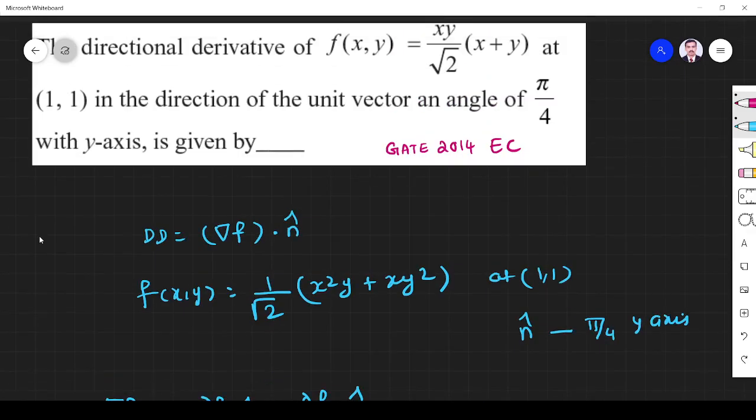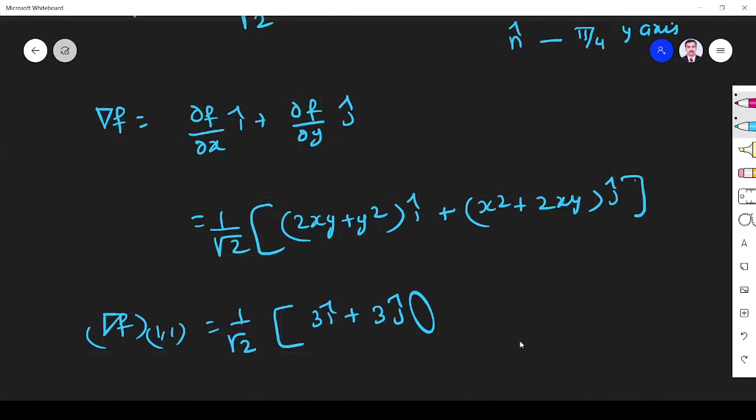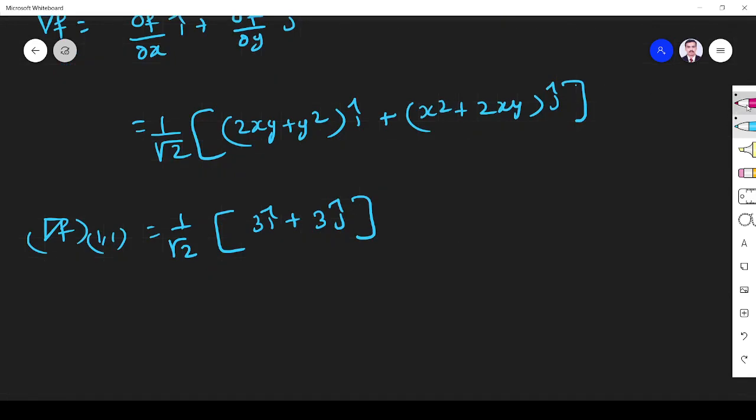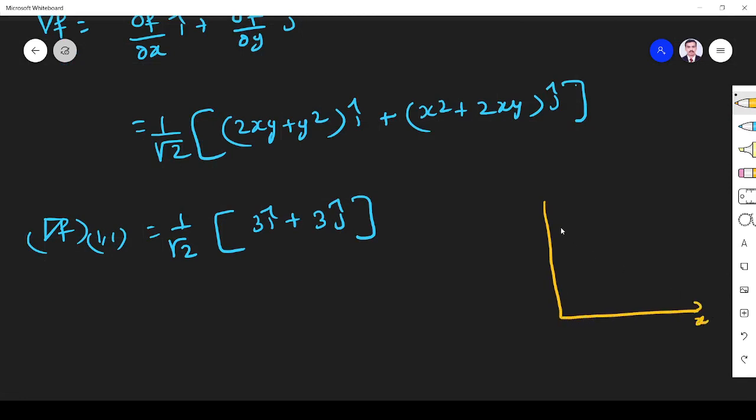n̂ is a unit vector. The unit vector is making an angle of π/4 with y-axis. This is x-axis, this is y-axis. This unit vector is n̂. The length is 1. It is making 45° with y-axis. So this is what it means. This is also 45°. So what should be this length? It is cos 45°, so it is 1/√2. This length is sin 45°, it is also 1/√2.